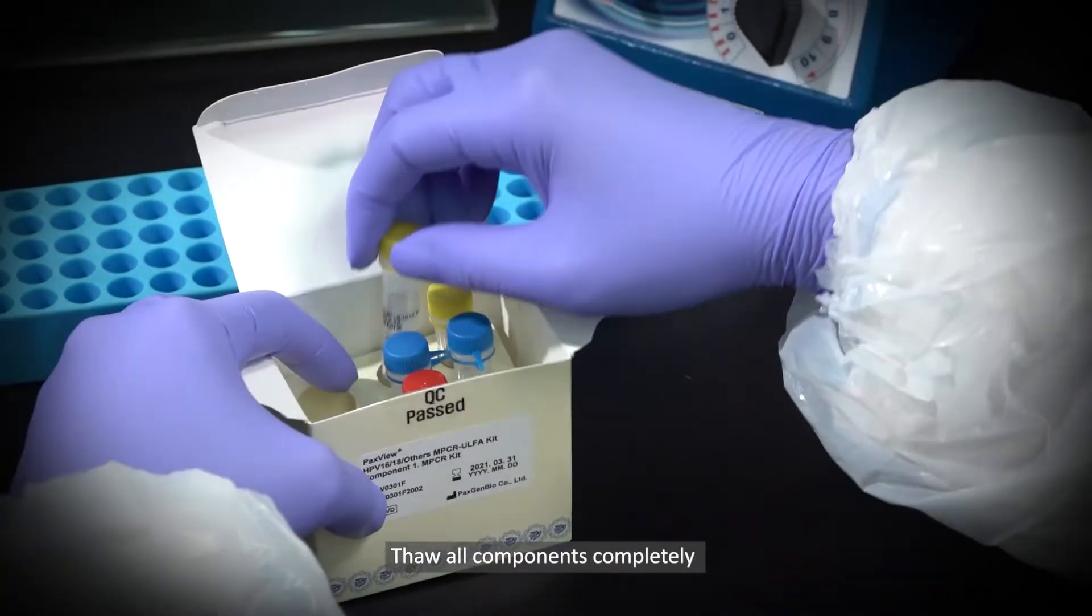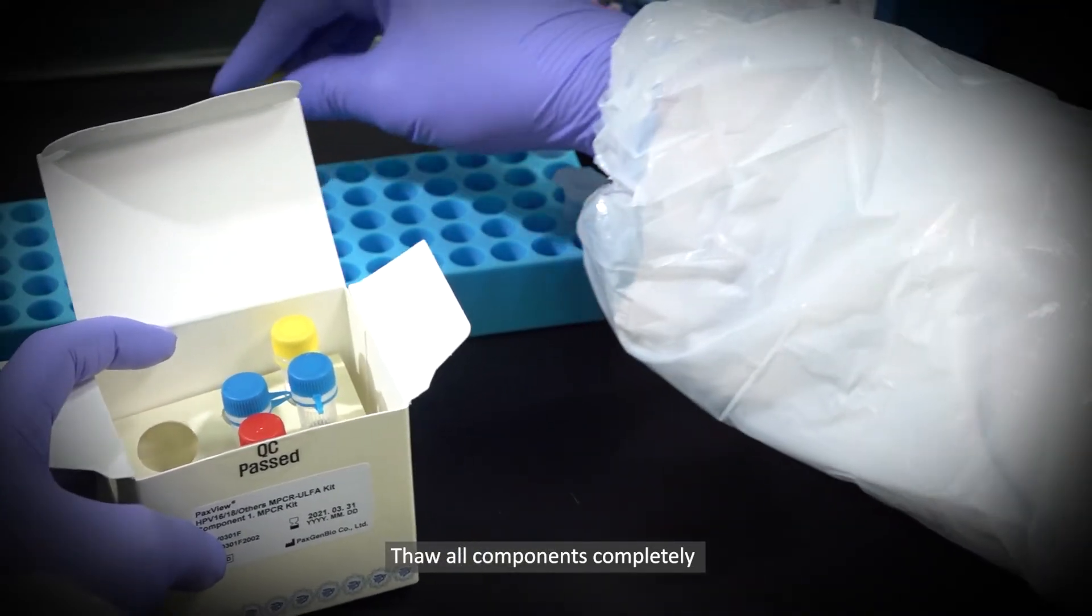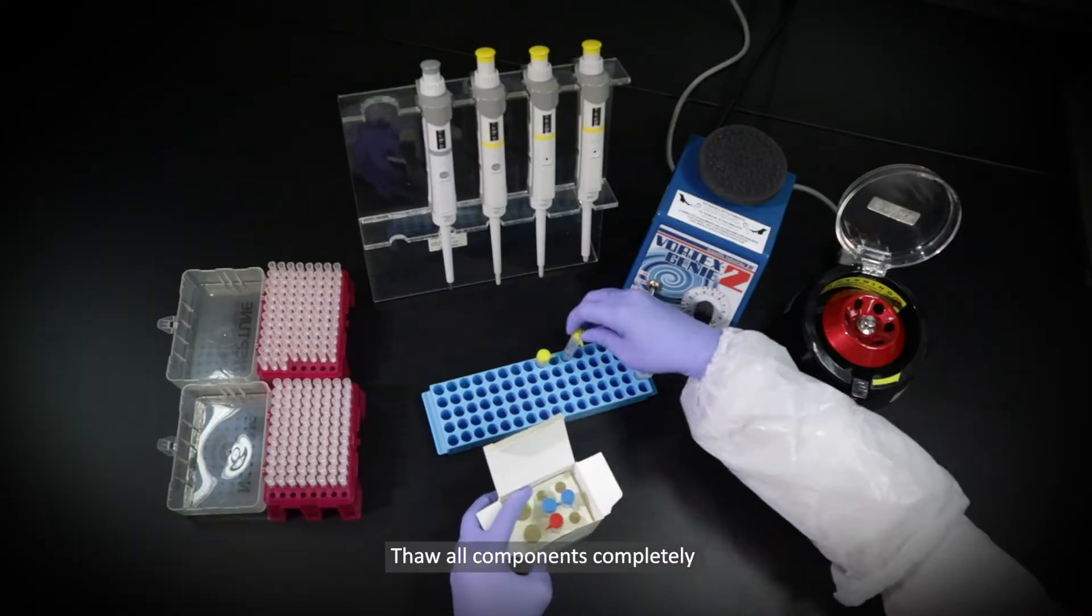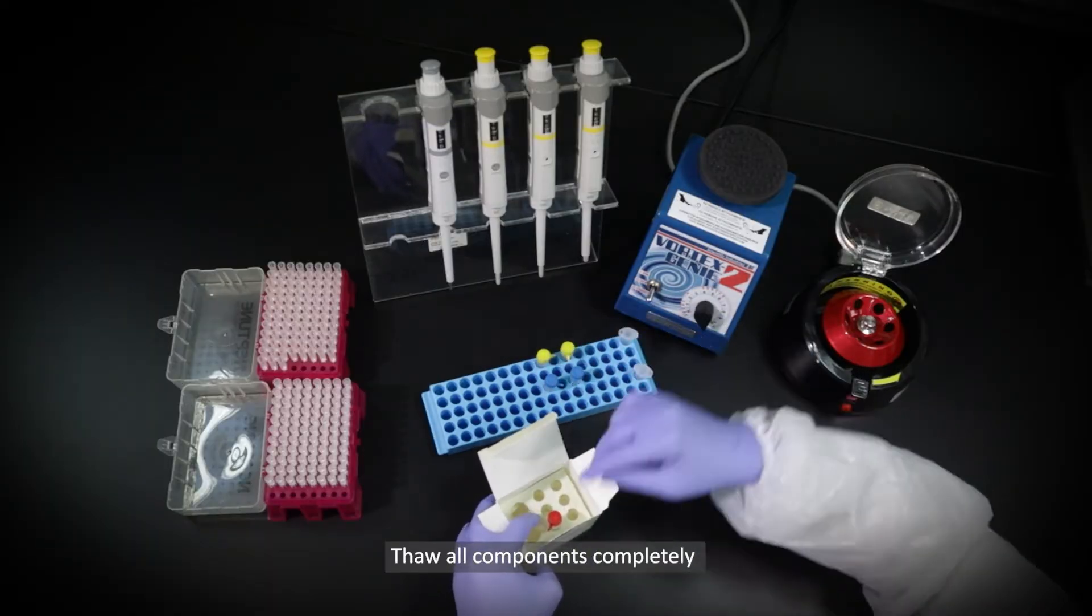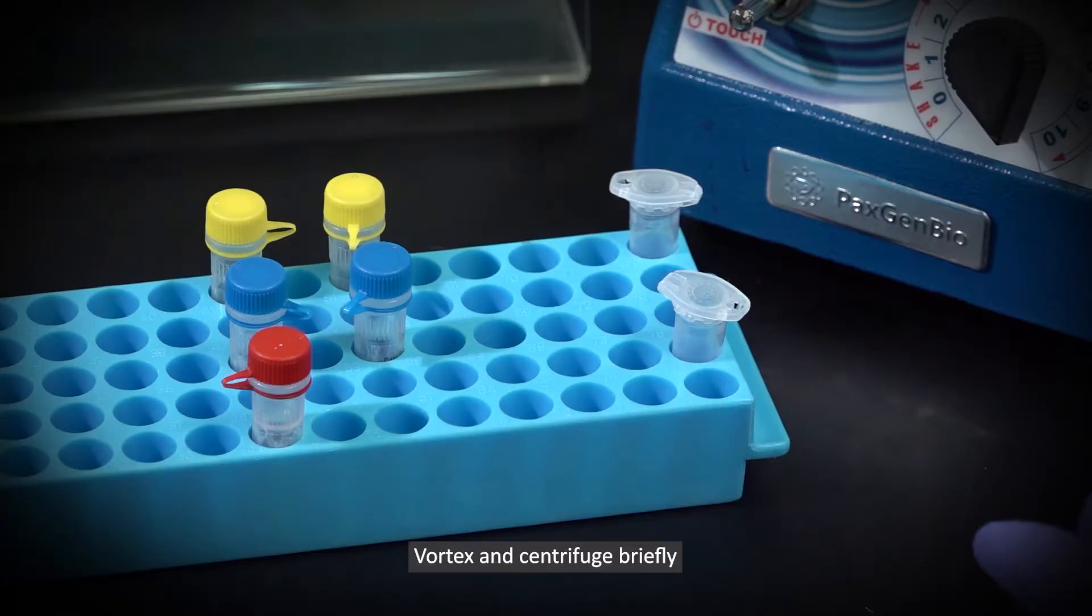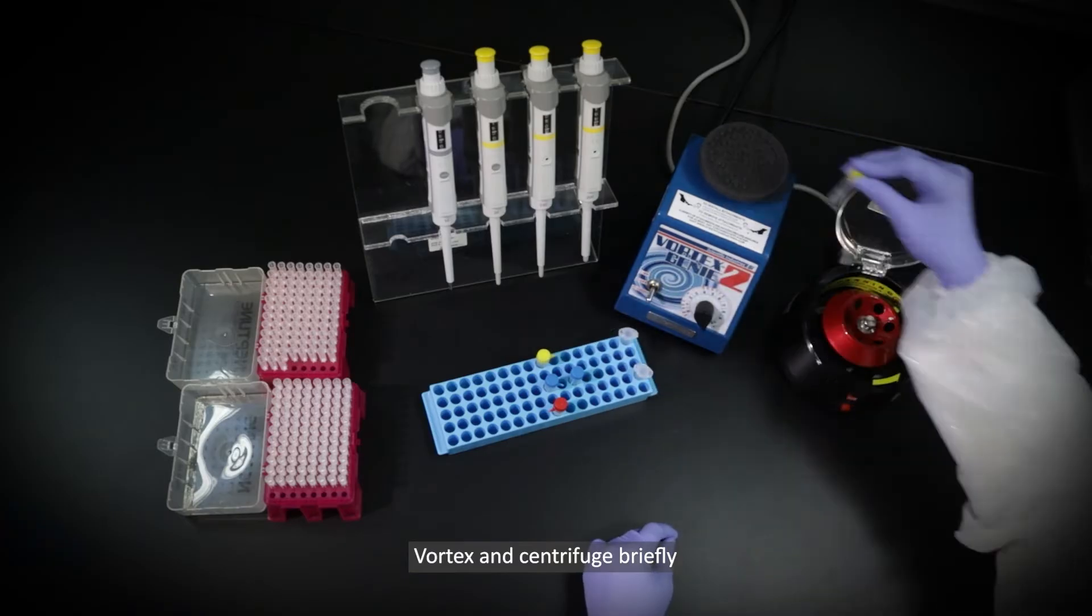Let's start to see how the PaxView Kit detects HPV viral DNA. PCR reagents of MPCR Kit are thawed at room temperature or on ice. The tube is mixed by vortexing and centrifuged briefly.